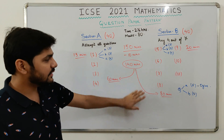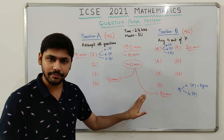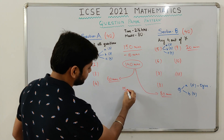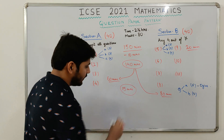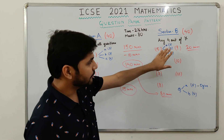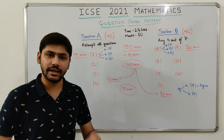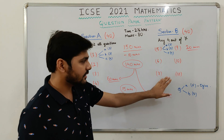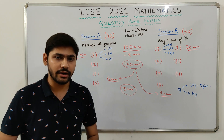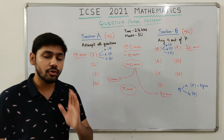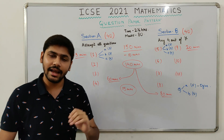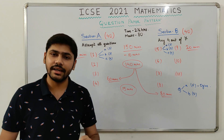That is my suggestion for using the 150 minutes of writing time. For the 15 minutes reading time, first read Section B and identify the four questions you will attempt. Then read Section A. Reading Section B first is important because you need to make that selection before you begin writing.